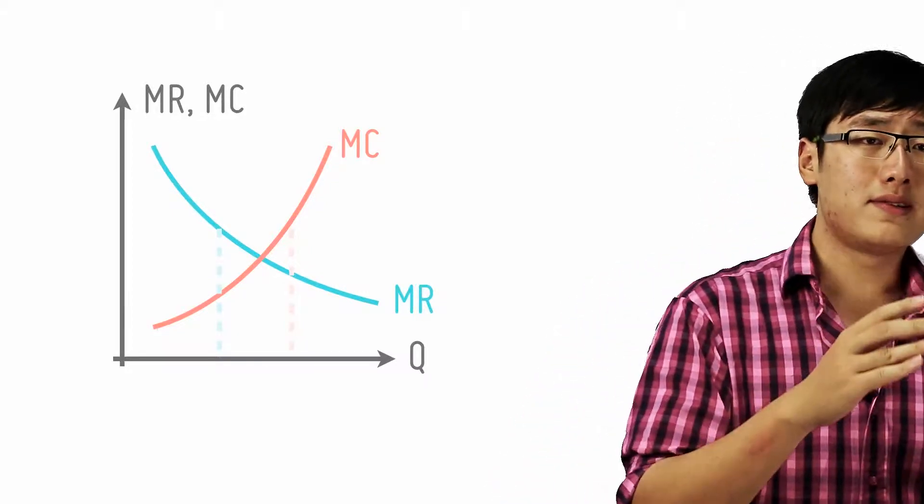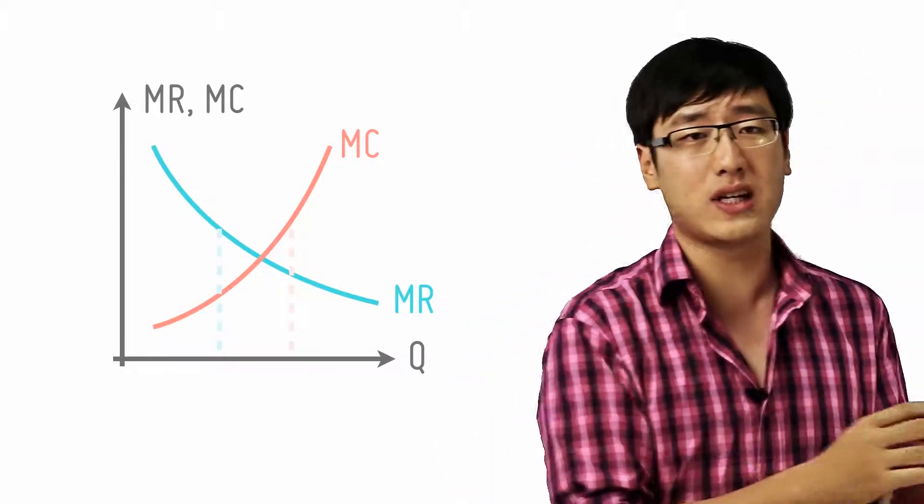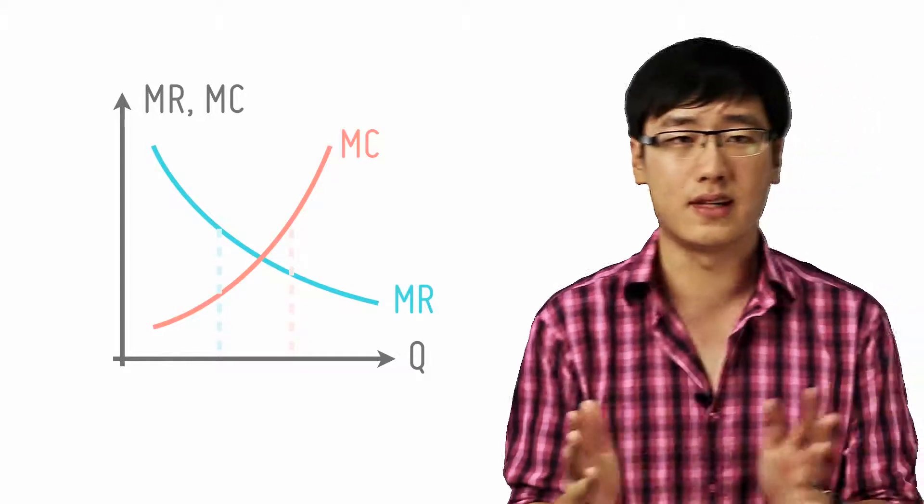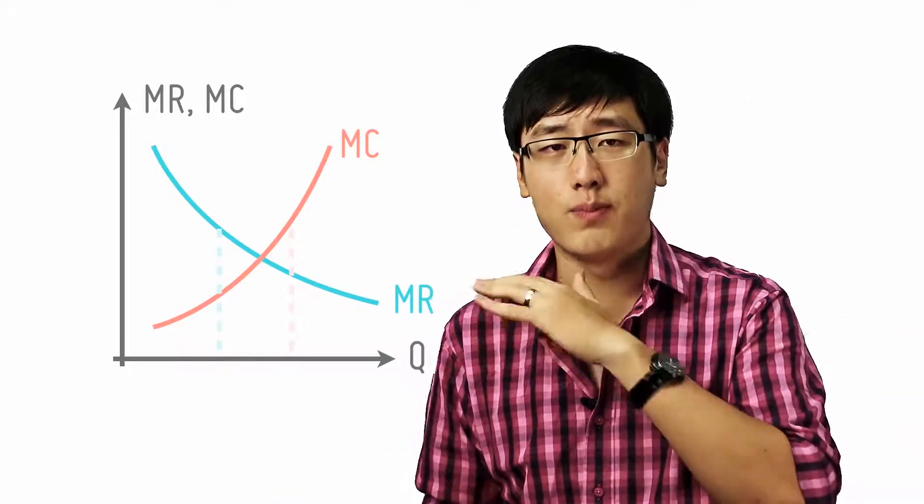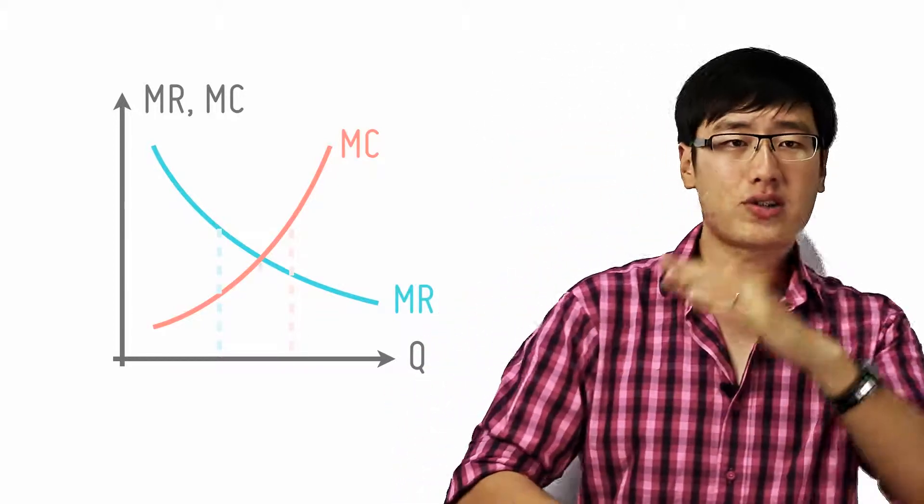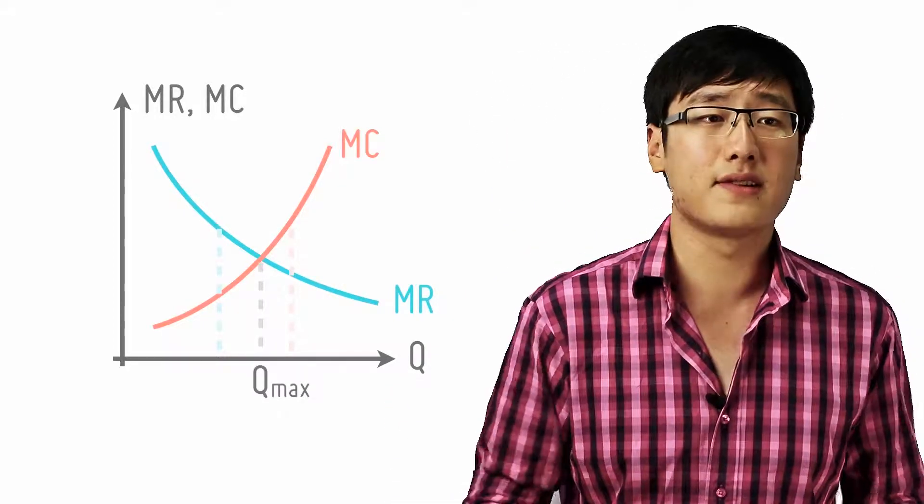So since the firm should keep producing when MR is more than MC, and it should stop producing when MC is more than MR, then it should just stop when MC equals MR. Its profit is maximized.